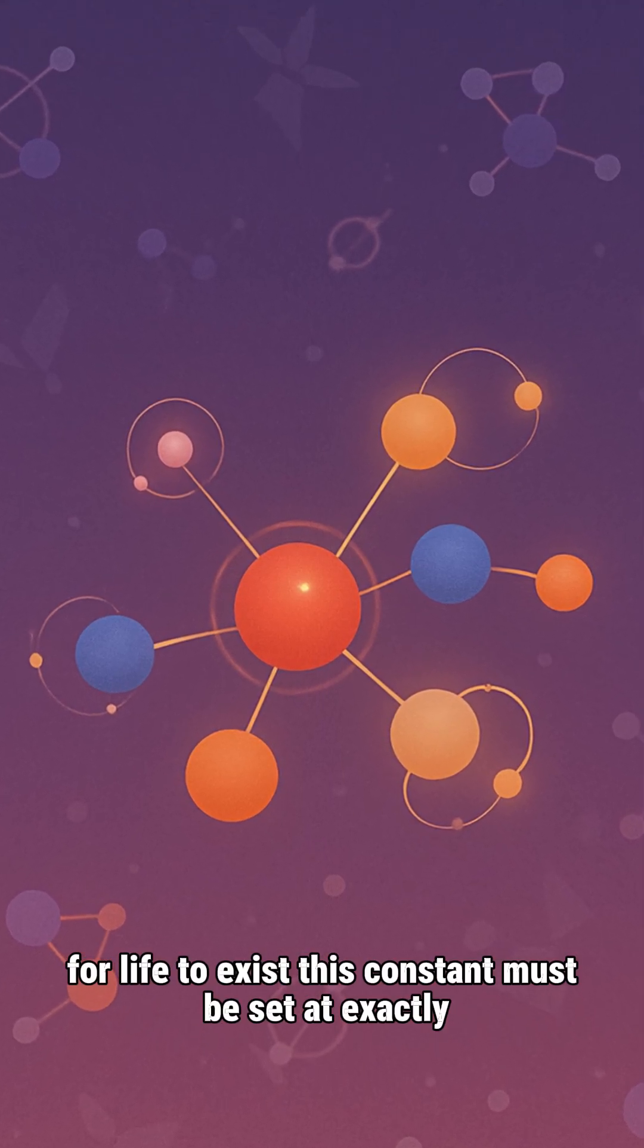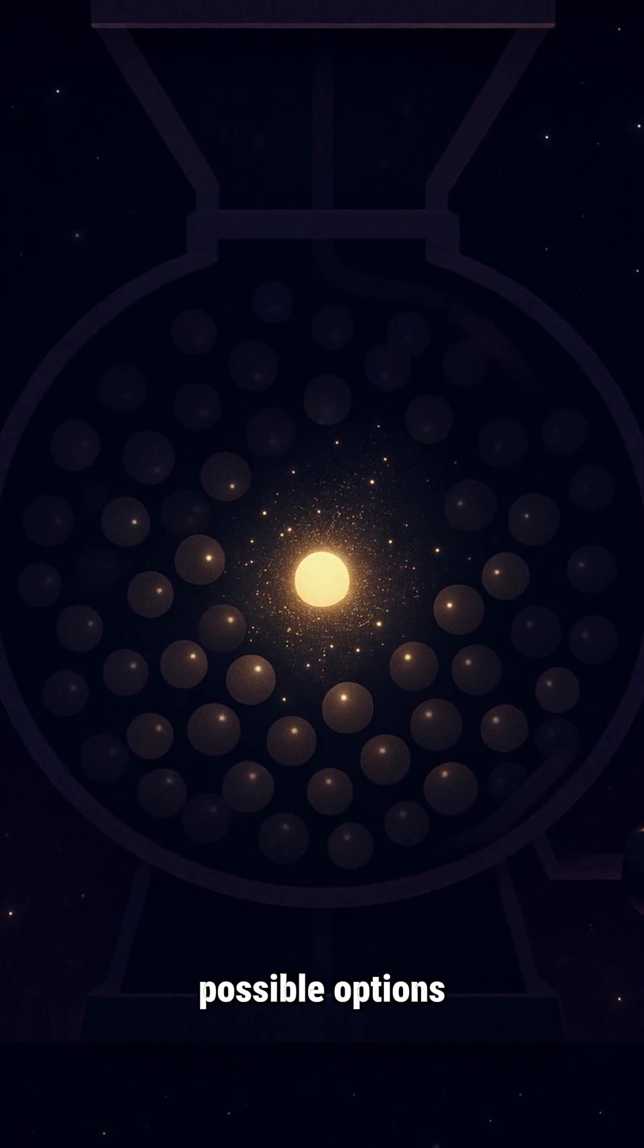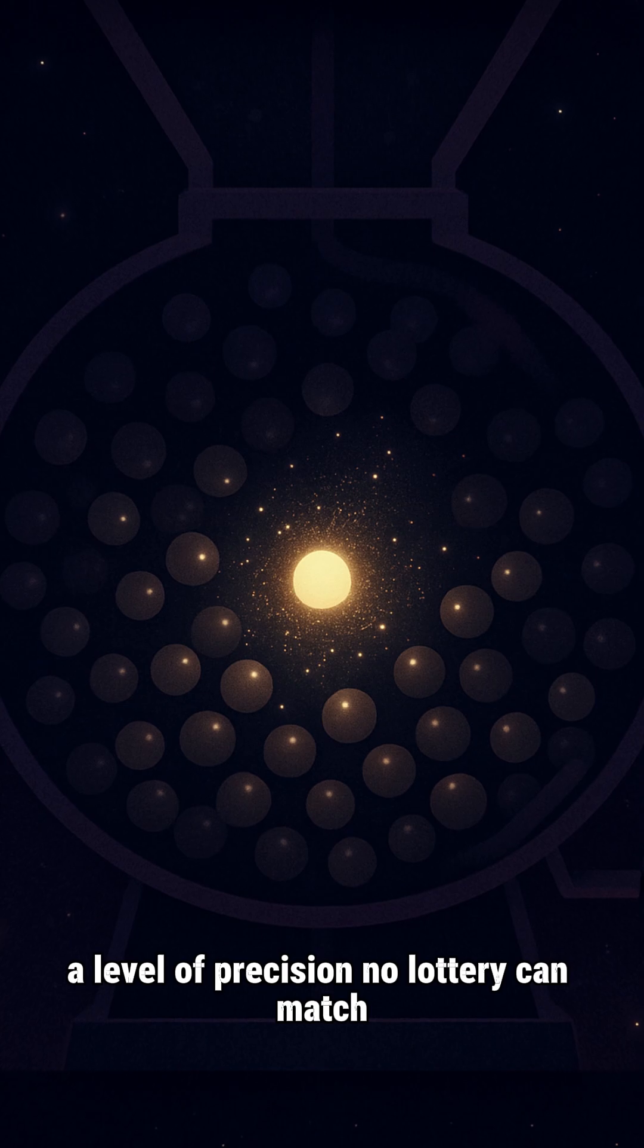For life to exist, this constant must be set at exactly one point out of 10 to the 120th possible options. A level of precision no lottery can match.